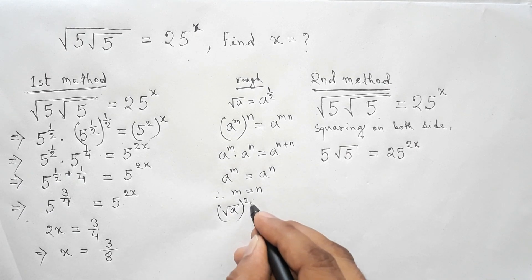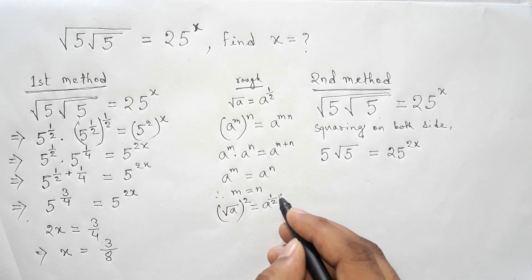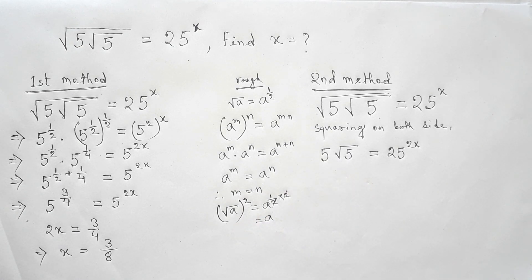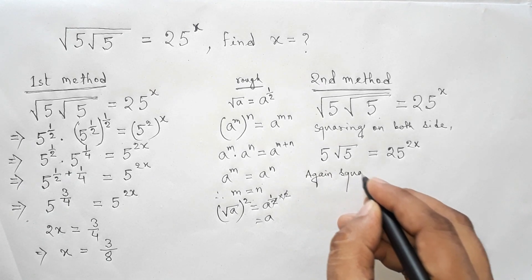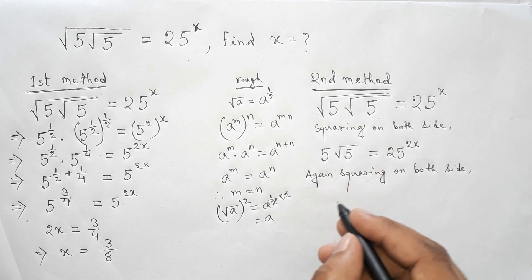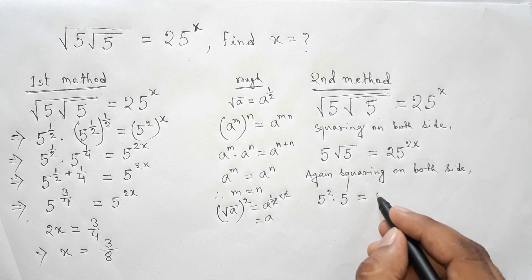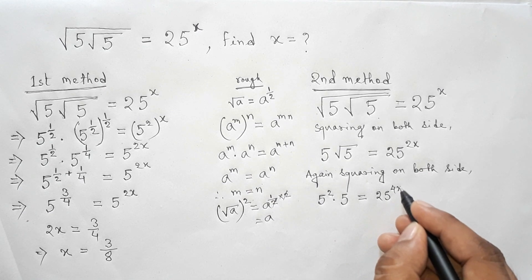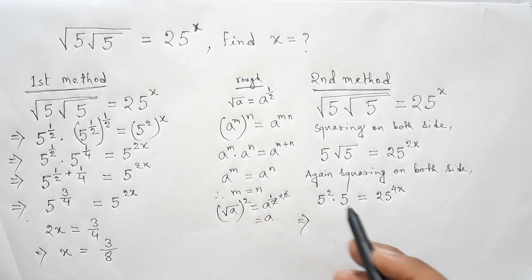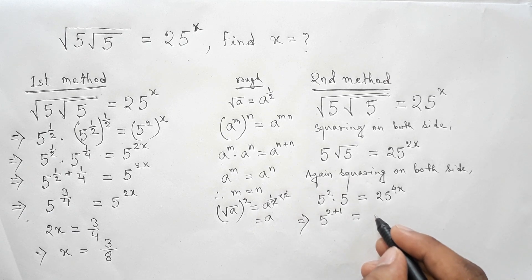As a quick note: root over a squared means a to the power 1 by 2 squared — the powers cancel to give just a. So root 5 squared gives 5. We square both sides again: 5 squared times 5 equals 25 to the power 4x, which gives 5 to the power 2 plus 1 equals 25 to the power 4x.